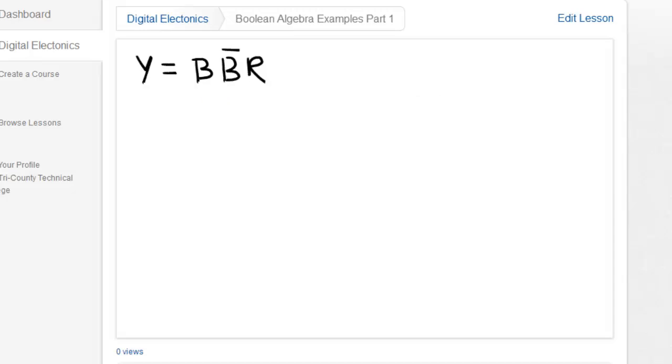So let's look at another one. Also on your sheet, you should see a rule that says x and not x are equal to 0. So that would mean that b and not b are equal to 0. So those two things are going to be equal to 0. So we have y equals 0 and r.